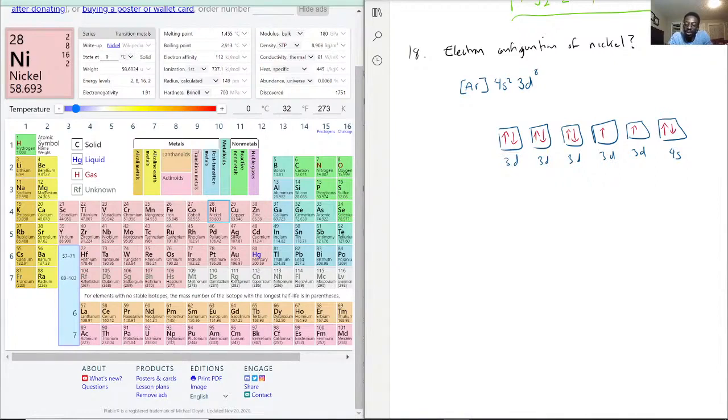So this is going to be the electron configuration of nickel. Actually, sorry, minor adjustment. You want to make sure you put your lowest number first. This right here would be the electron configuration for nickel.